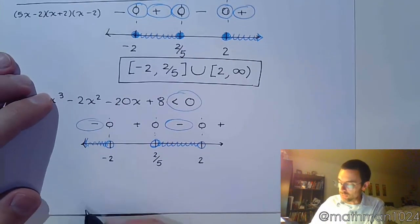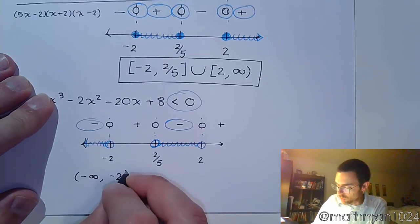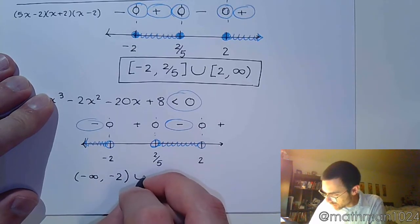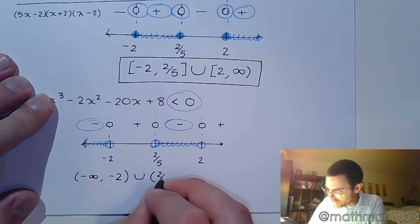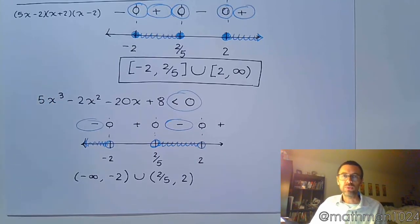So when we write the interval notation, that would be from negative infinity to negative 2 parentheses, union 2/5 to 2 parentheses on both of those, because it says less than but not equal to.